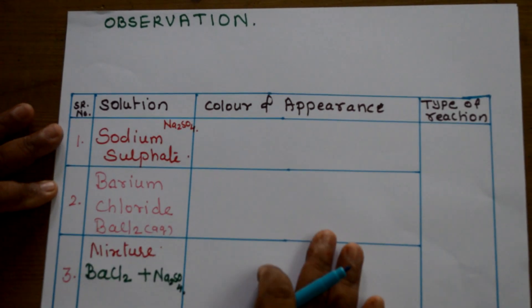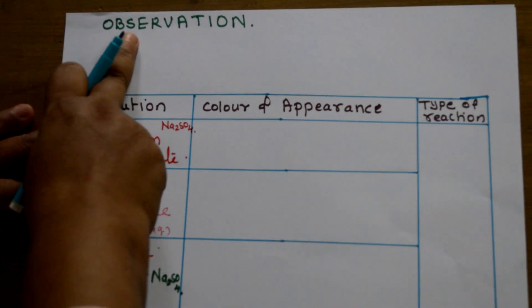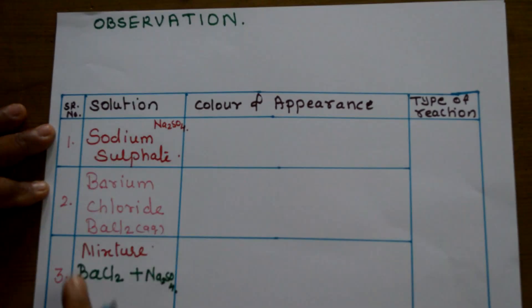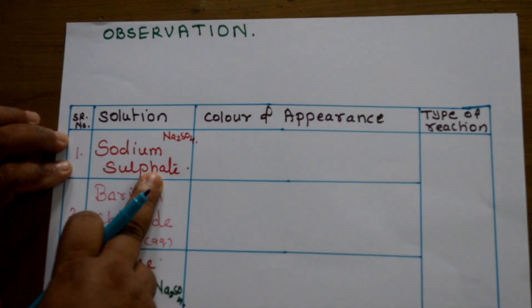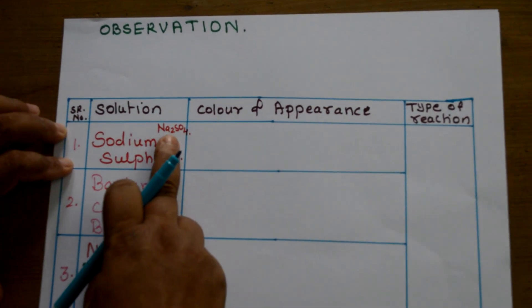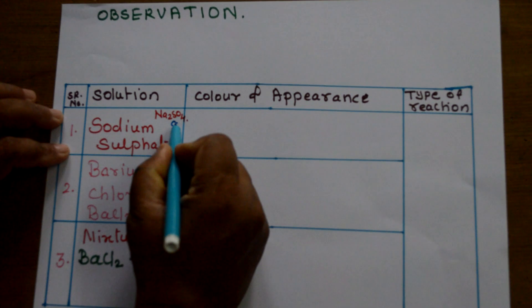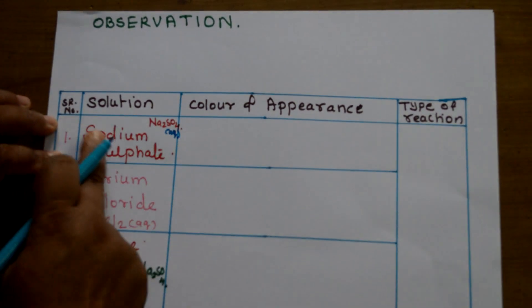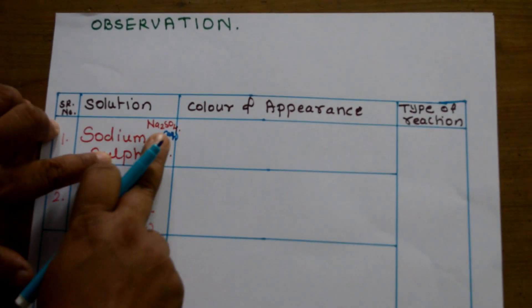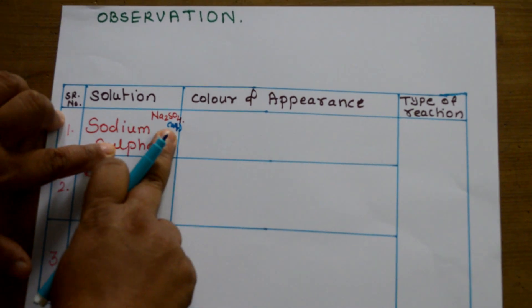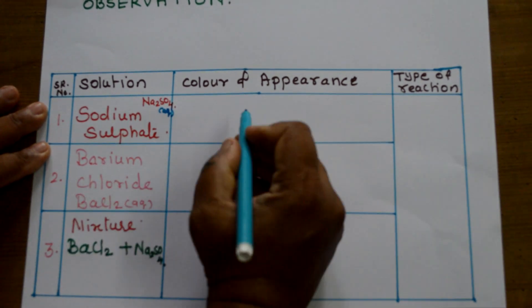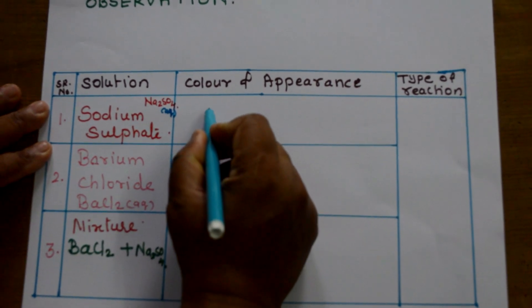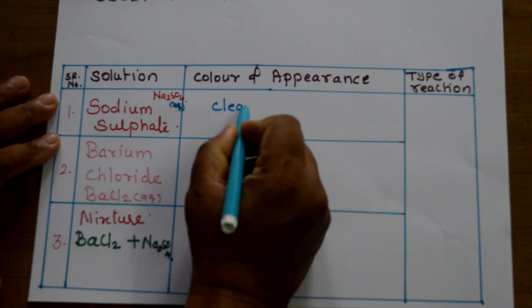After performing the experiment, children, we need to note down the observation of what we observed. We had the solution sodium sulphate, Na2SO4 aqueous. Aqueous means we have dissolved sodium sulphate salt in water and we got the solution. So colour and appearance: clear and transparent.